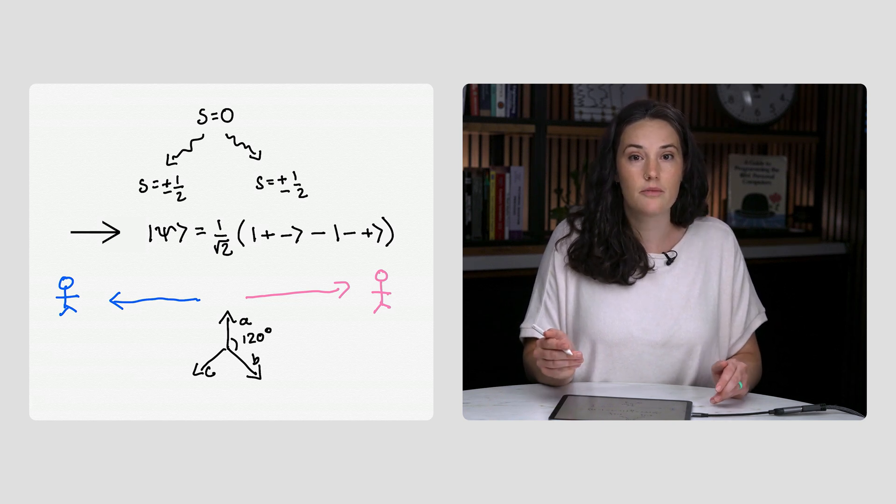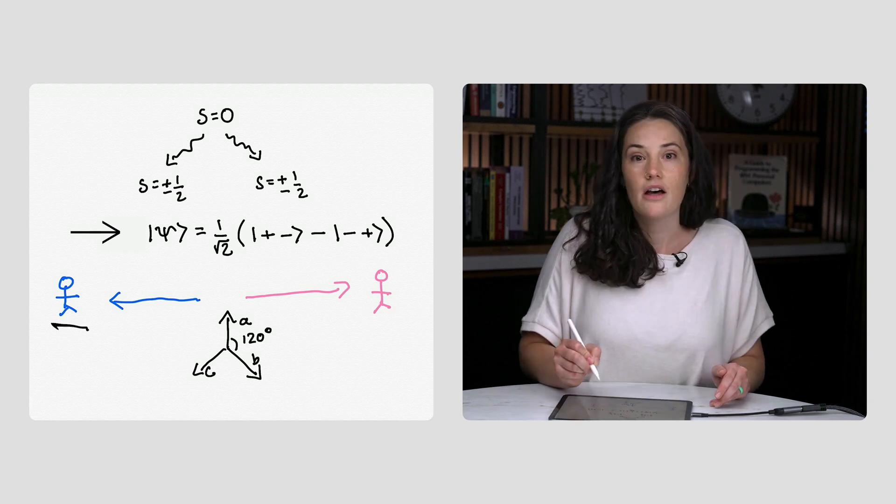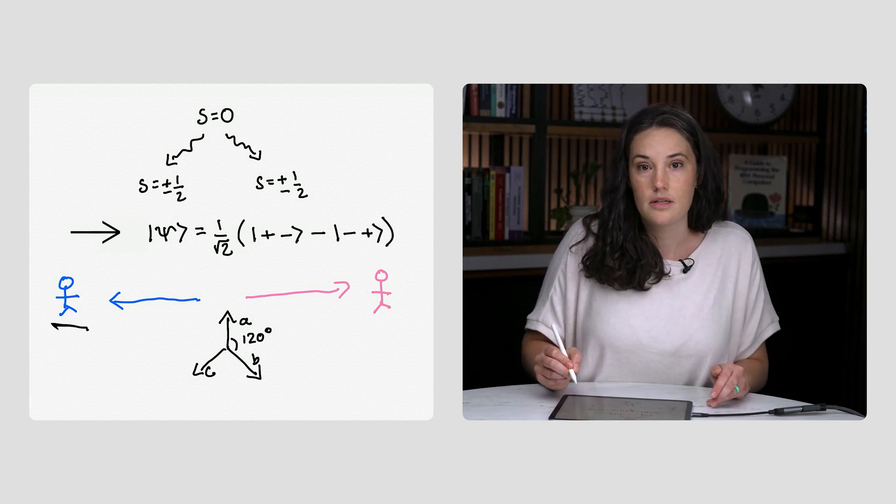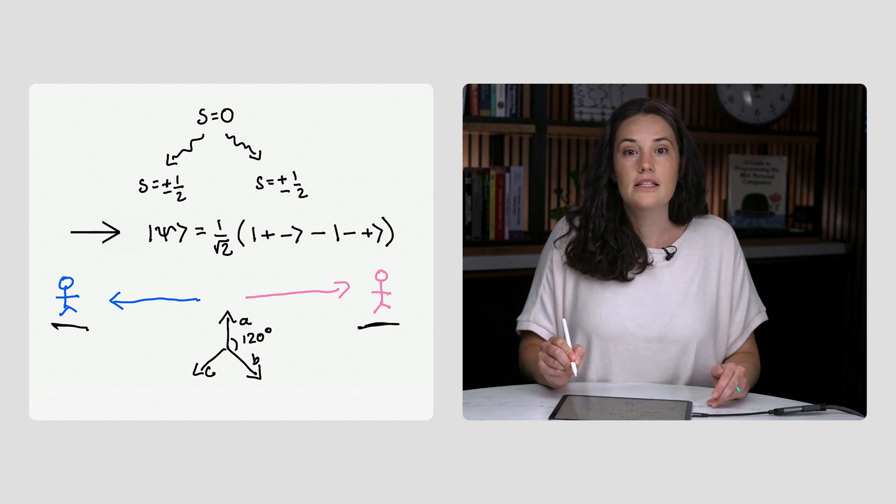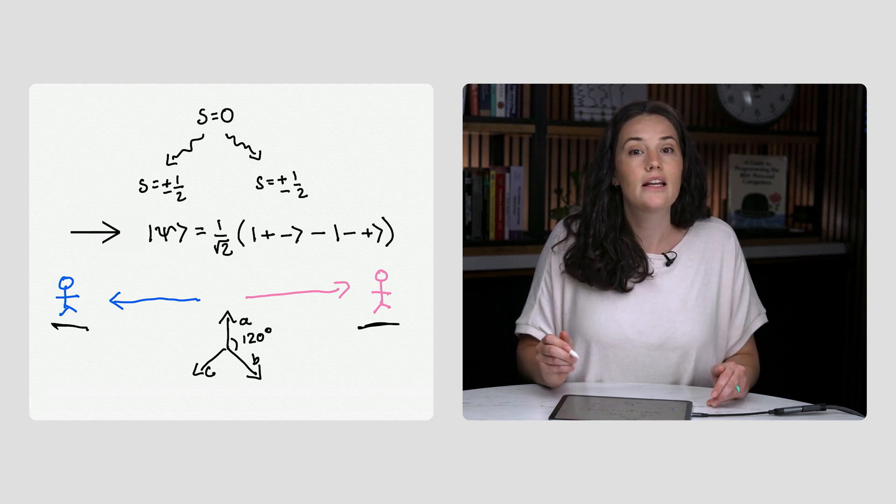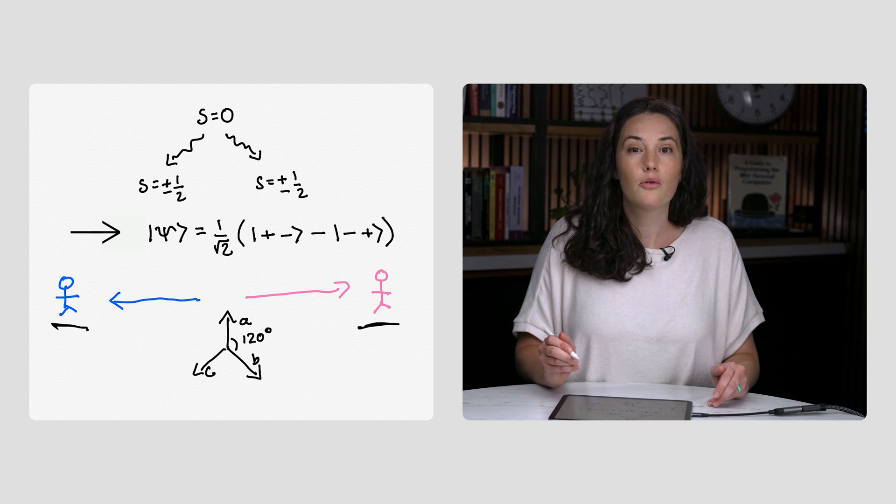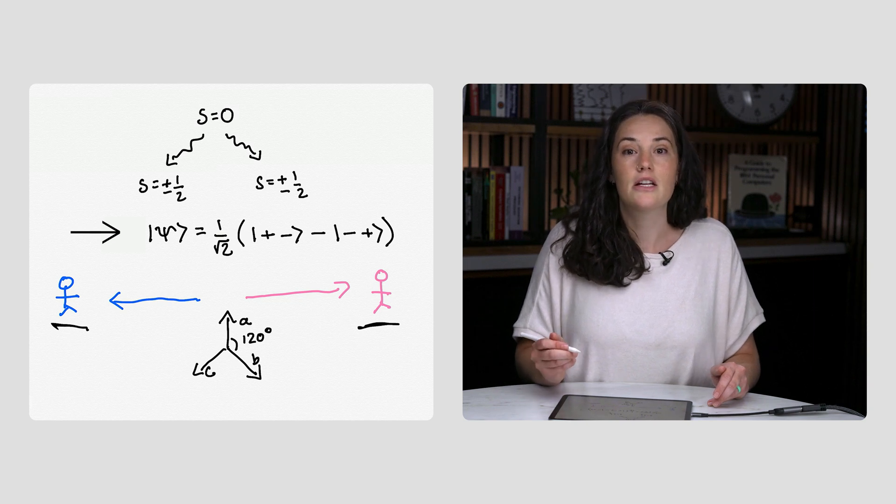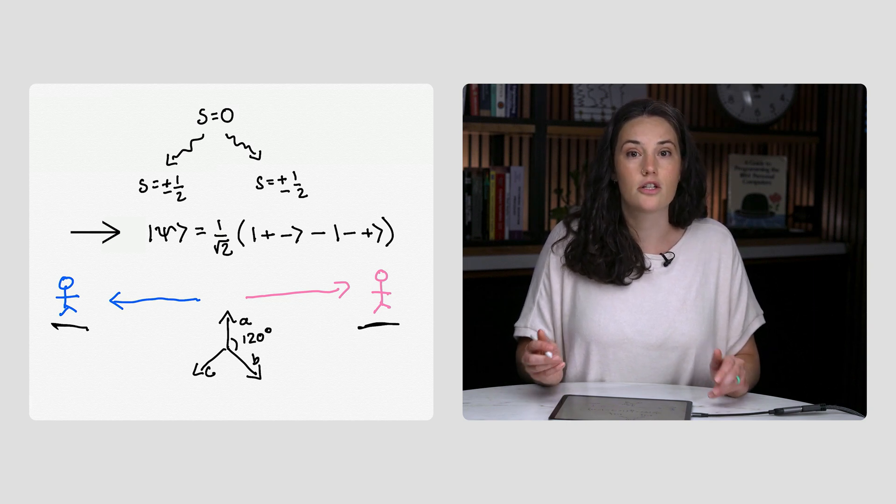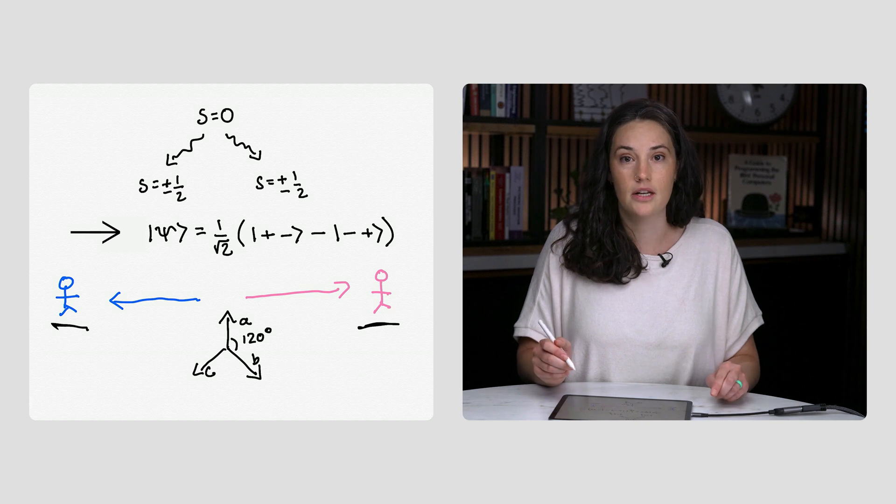If one was measured to be up way over here, the other must instantaneously know to be down over here. These hidden variables could be any complicated set of instructions for the outcome of experiments. But the point is that the spin state of each particle separately is determined, so no communication is necessary.